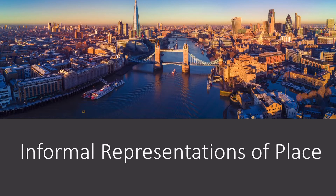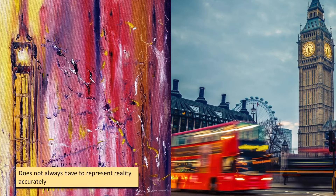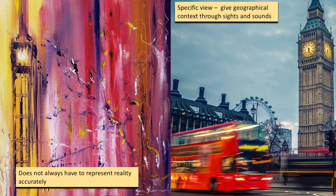I'm going to look at informal representations of place. This could be anything from a poem, a piece of artwork, a film, or a photograph like this one of London. One thing we need to know about informal representations is they don't always have to represent reality. So this is an abstract painting of Big Ben — it doesn't actually look like that, it's someone's interpretation of it. Informal representations don't have to look exactly like reality, but they do give us a very specific view — the geographical context and especially an impression of the sights and sounds of a place, which formal representations don't always do.